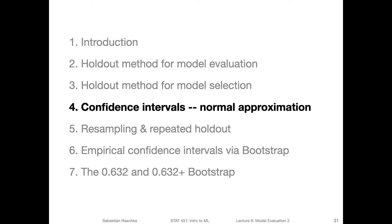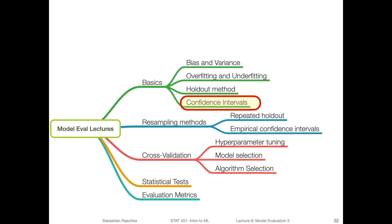In this video, we are going to talk about confidence intervals for our classification error or classification accuracy estimate from the test set. We are going to use the normal approximation method for doing that — that's the simplest method. We are right now still in the basic section, discussing basic confidence intervals using the normal approximation method.